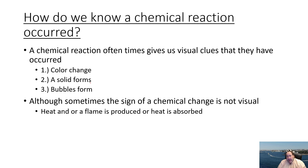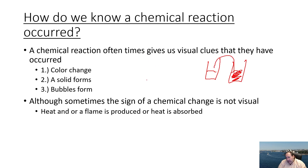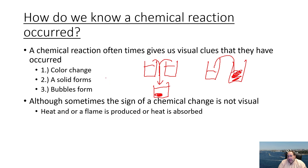When we talk about a chemical reaction, how do we know one actually occurred? A lot of times there's a color change — maybe you mix together a couple of solutions and a color change happens. Also very commonly, you might mix solutions together and make a solid. A solid that forms is sometimes referred to as a precipitate, abbreviated as PPT in chemistry.